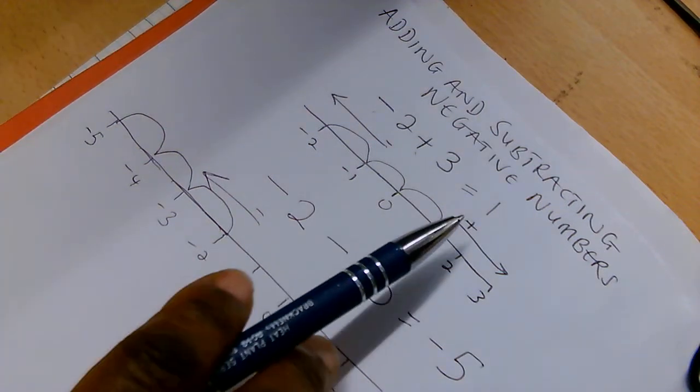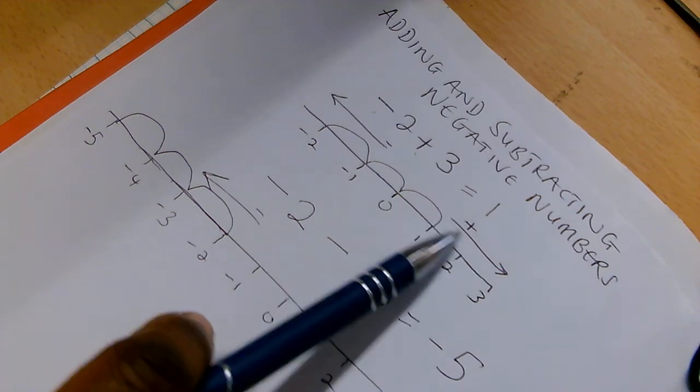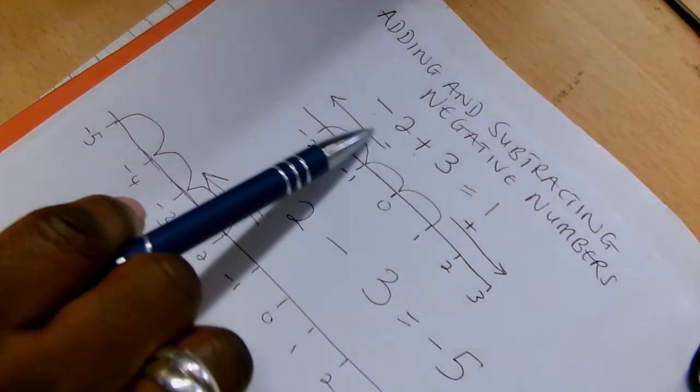We're going to be adding and subtracting negative numbers today. When you're adding on the number line, you go that way. And when you're subtracting on the number line, you go this way.